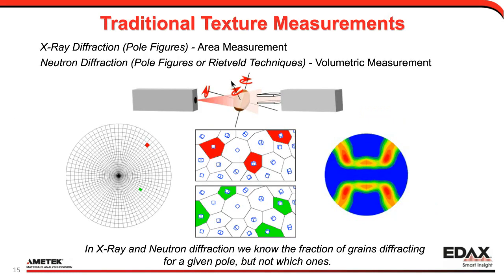Let's talk about how we collect the data and how it affects texture measurements. Traditionally, X-ray pole figures were measured using X-ray diffraction and a goniometer. You have a sample, move it to a certain orientation, and measure diffraction intensity — those grains that satisfy Bragg's law at the given orientation will produce an intensity. You go to the next position and measure the intensity again. While this schematic shows certain grains giving certain intensities, we really don't know which grains are doing that; we just know the statistical distribution of intensities over the pole figure.